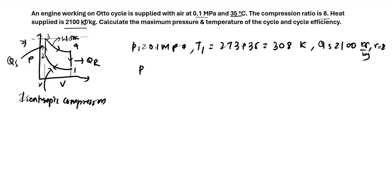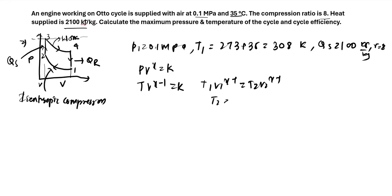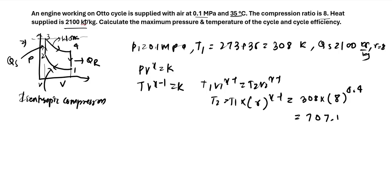First we find temperature and pressure at point 2. For the isentropic process 1 to 2, we can write T·V^(γ−1) = constant, giving T1·V1^(γ−1) = T2·V2^(γ−1). Therefore T2 = T1 × (V1/V2)^(γ−1) = 308 × 8^0.4, which gives T2 = 704.476 K.